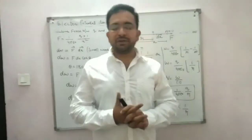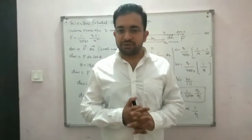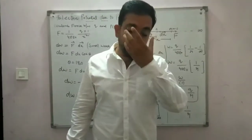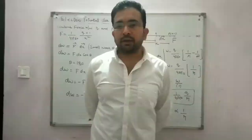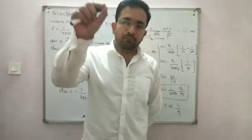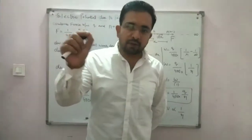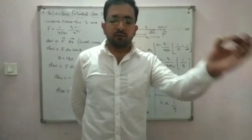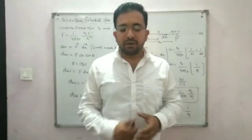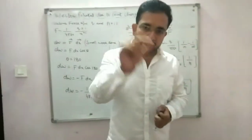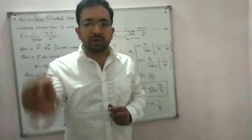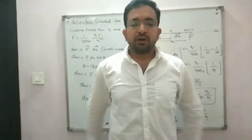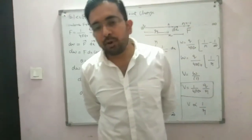Good morning students. Our topic is about electric potential. Last time our definition of electric potential: electric potential V is equal to the amount of work done required to bring a unit positive test charge from infinity to any particular point. V equals work done W over test charge.